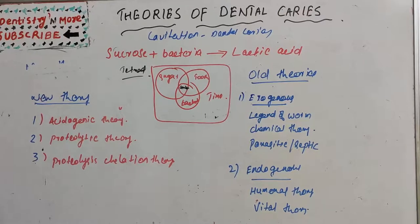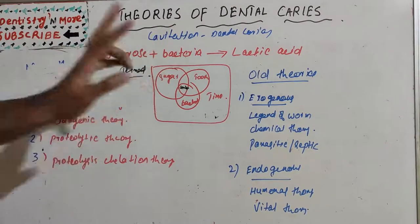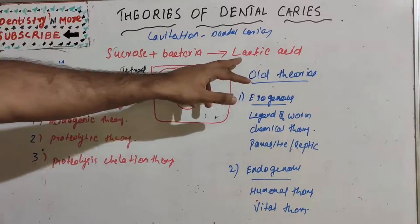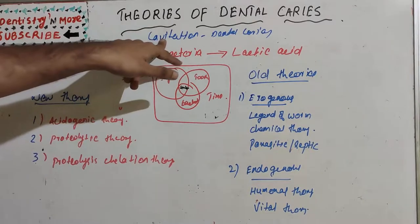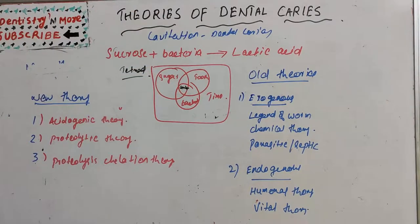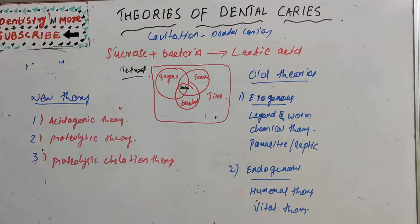Hello everyone, welcome back to another session in Dentistry and More. Today's topic is theories of dental caries. We are very familiar with the concept of dental caries — how it starts when there is presence of sucrose and bacteria in the oral cavity, producing lactic acid which results in demineralization and ultimately cavitation. This session is about the old and new theories of dental caries.